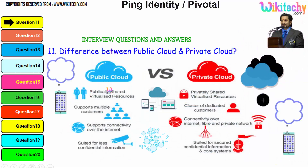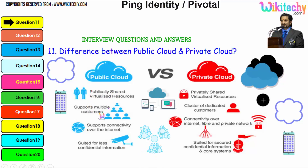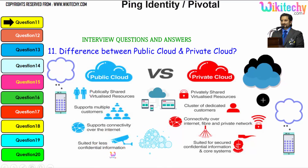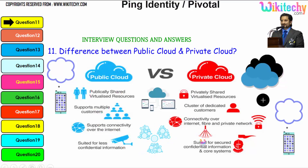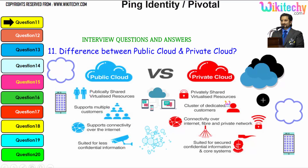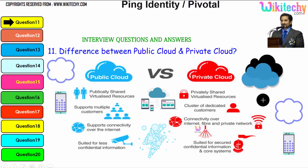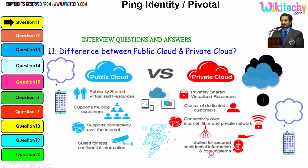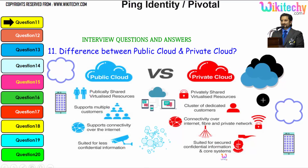Further differences: public cloud uses publicly shared virtual resources, supports multiple customers, connects to the internet, and is suited for less confidential information. Private cloud uses privately shared virtualized resources, serves a cluster of dedicated customers, and connects via internet, fiber, and private network. It is suited for secure, confidential information and core systems. That is how we can show the difference between public and private cloud.